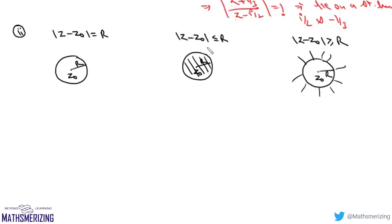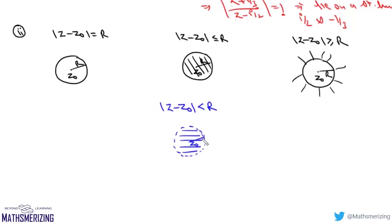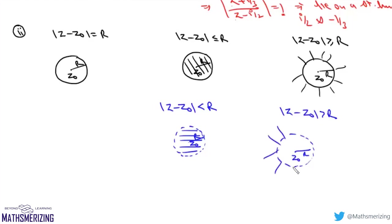If we have a strict inequality |z - z₀| < r, it represents points lying strictly inside the circle, not on it, so we draw the circle as a dotted circle. Similarly, |z - z₀| > r represents points lying strictly outside the circle, again shown with a dotted circle of center z₀ and radius r.